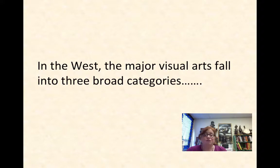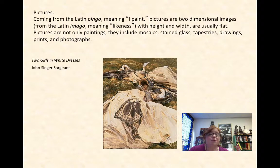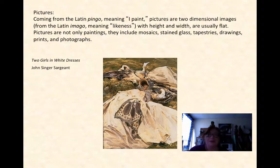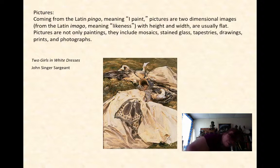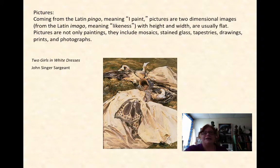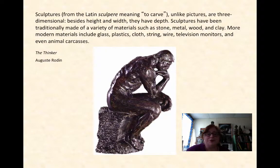In the West, the major visual arts fall into three broad categories. We have pictures — the word 'picture' comes from the Latin 'pingo,' meaning 'I paint' — which are two-dimensional images with height and width. Paintings are pictures, but pictures also include mosaics, stained glass, tapestries, drawings, prints, and photographs. Sculptures come from the Latin word 'sculpere,' meaning 'to carve.' Unlike pictures, sculptures are three-dimensional: besides height and width, they have depth. Sculptures have traditionally been made of stone, metal, wood, and clay, while modern artists incorporate everything from glass, plastics, and cloth to television monitors, animal carcasses, trash, styrofoam, chocolate, and lipstick.